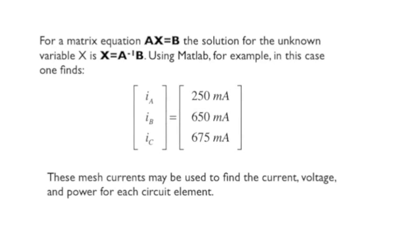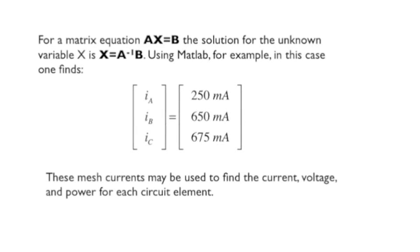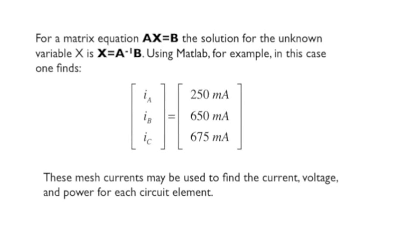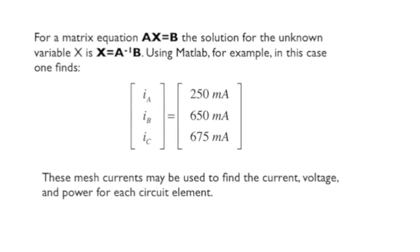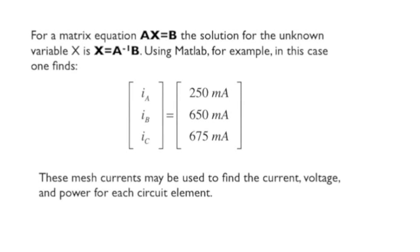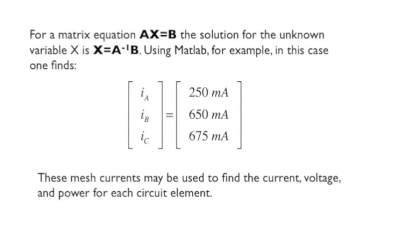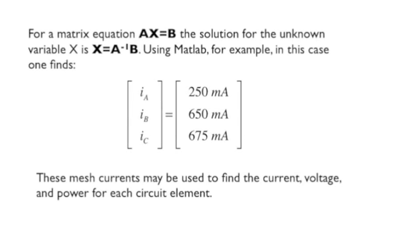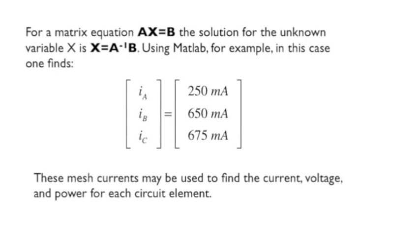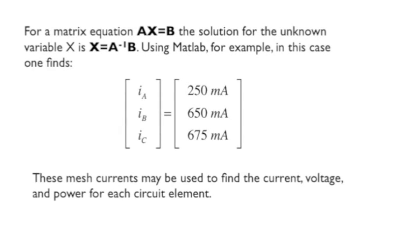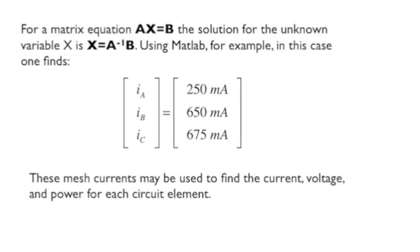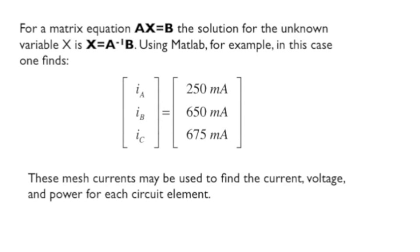Solving a matrix equation, A times X equals B, where A and B are known matrices and X is an unknown matrix, can be done by multiplying the inverse of the A matrix times B. In that order, matrix multiplication is not generally commutative. Nice to have a computer for that. We see that the mesh current values are I sub A equals 250 milliamps, I sub B equals 650 milliamps, and I sub C is equal to 675 milliamps. This is how we obtained the values for mesh currents that we used in the previous lesson.